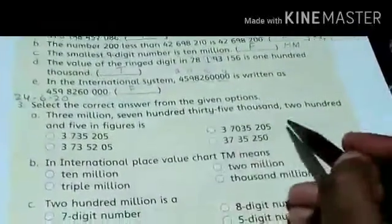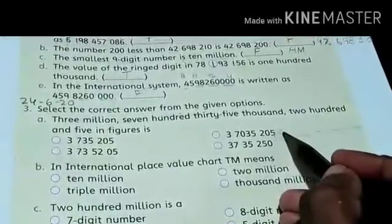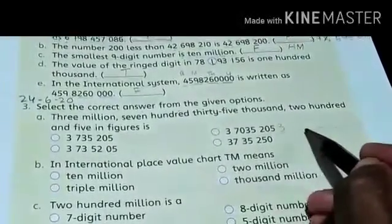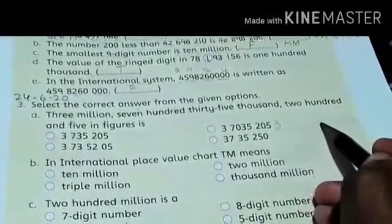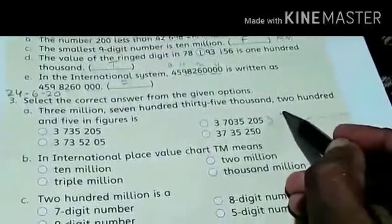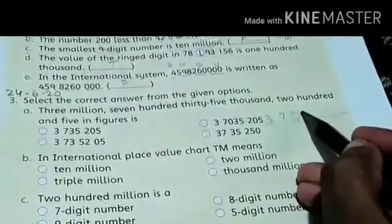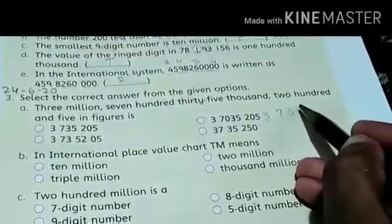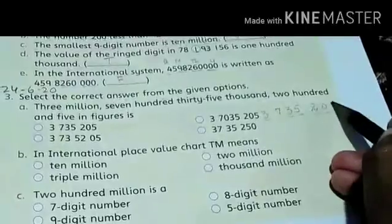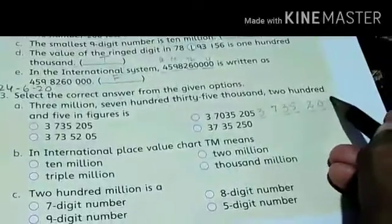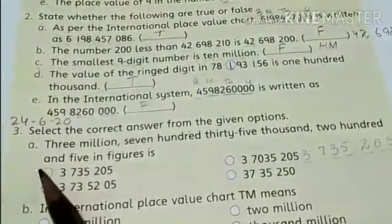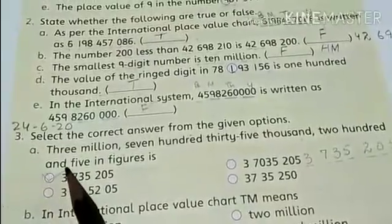3 million. I will write 3 million, 735,000 — placing 735,000 here — then 735,205. 205. So my correct answer is this one.